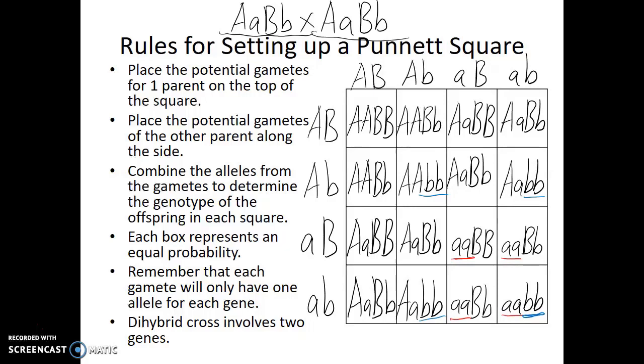This is the result that Gregor Mendel saw with his dihybrid cross, where nine sixteenths were dominant for both traits. Three out of the sixteen were dominant for gene A but recessive for gene B. Three out of sixteen were recessive for gene A but dominant for gene B. And only one out of sixteen were recessive for both the A and the B genes.